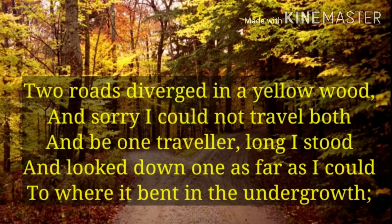In the first stanza, the poet tells: 'Two roads diverged in a yellow wood, And sorry I could not travel both, And be one traveller, Long I stood and looked down one as far as I could, To where it bent in the undergrowth.' At first, I will tell you the superficial meaning or the surface meaning, and thereafter the intended meaning of the poet.